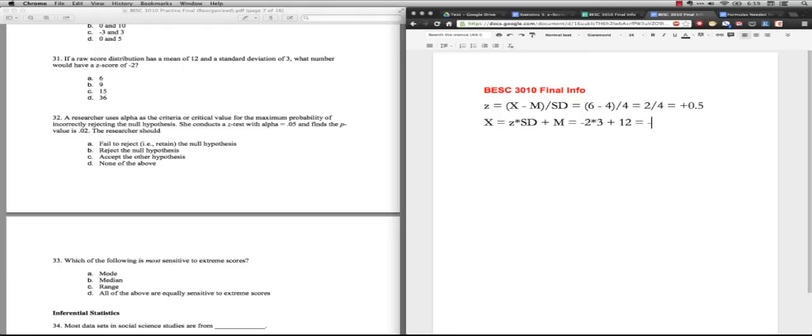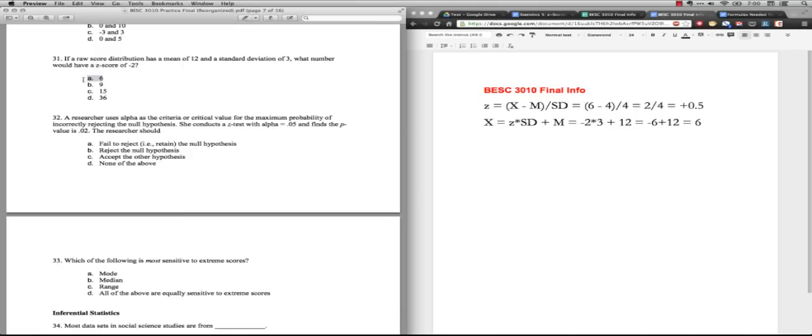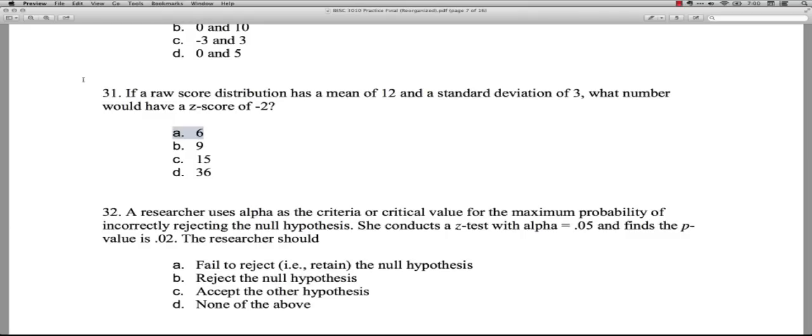Minus two times three is minus six. And then we add 12. And what we end up with is, well, minus six plus 12 is the same as 12 minus six. So the answer is six. And that is answer A right here. A score of six would have a z-score because it's two standard deviations below the mean. So that makes sense.